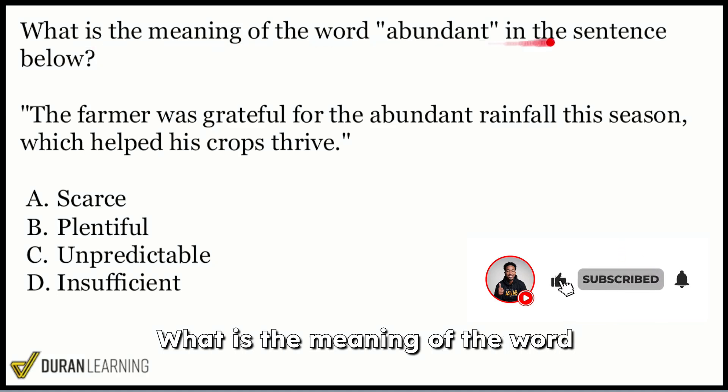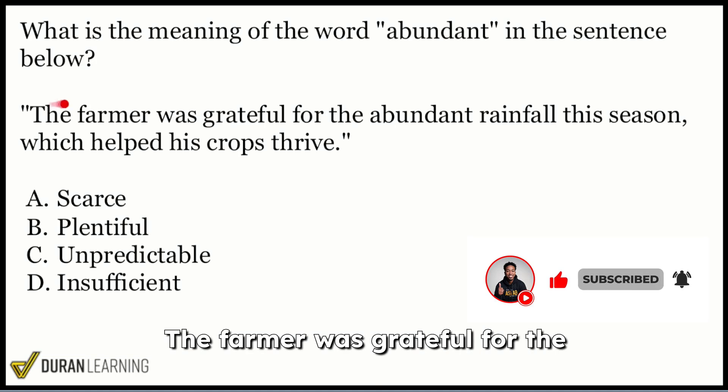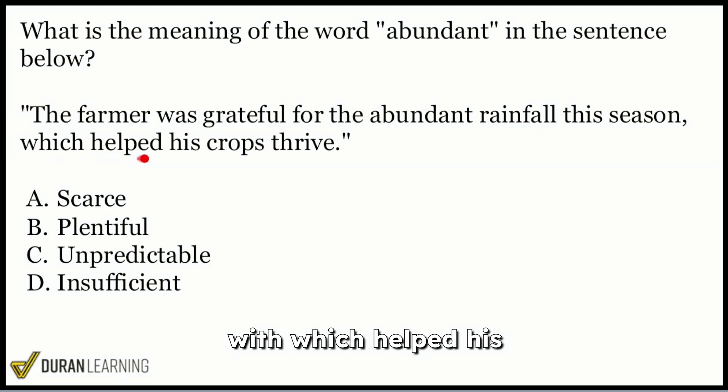Next up, for word knowledge, we have what is the meaning of the word abundant in the sentence below? The farmer was grateful for the abundant rainfall this season, which helped his crops thrive. Hmm, what do crops really need? Well, food, water, right? Time to grow. So an abundant rainfall, well, you need water. So it looks like we had a lot of water. Would it make sense if it said not a lot of water? So scarcity in water? Well, no, I don't think that crops and plants would thrive unless we're talking about desert conditions. So we're talking about a farmer here. Farmers don't farm in the desert.